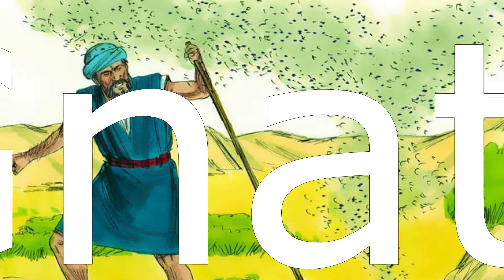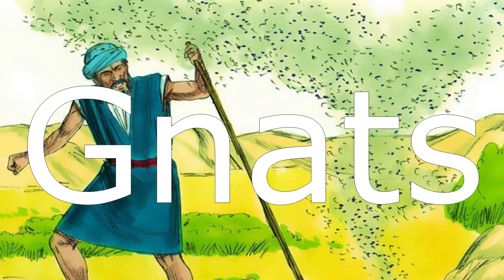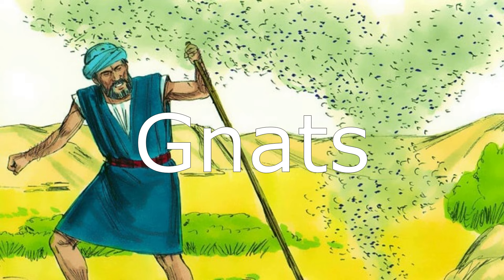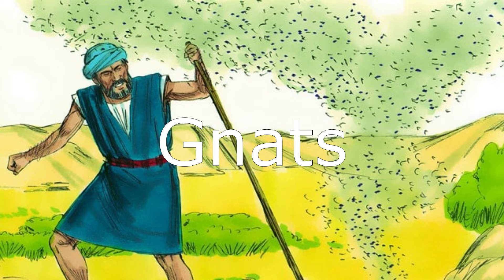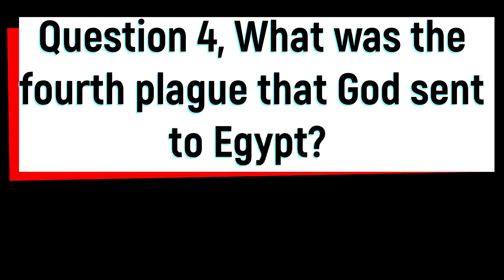The answer is gnats. God made dust turn into gnats, which are tiny biting insects. They swarmed over people and animals and made them miserable. Question 4: what was the fourth plague that God sent to Egypt?